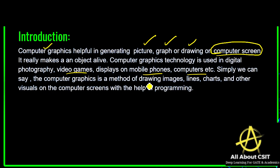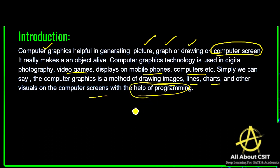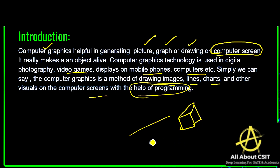Simply we can say computer graphics is a method of drawing images, lines, charts, and other visuals on the computer screen with the help of programming. This is very important — programming is what enables drawing the pictures. With the help of programming installed in your computer, you are able to draw pictures on the screen.